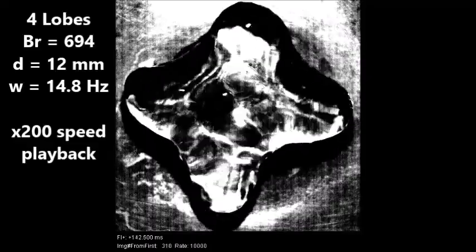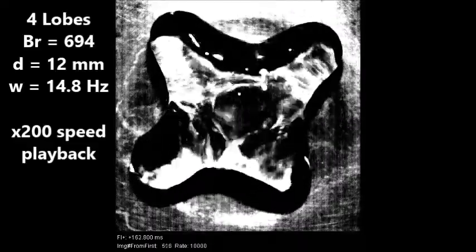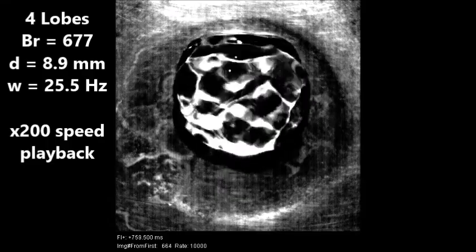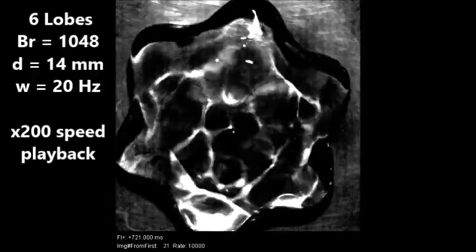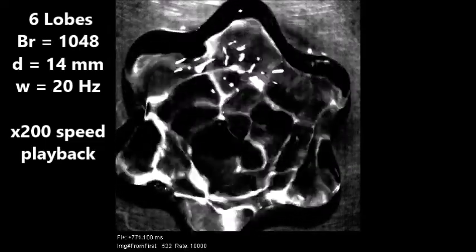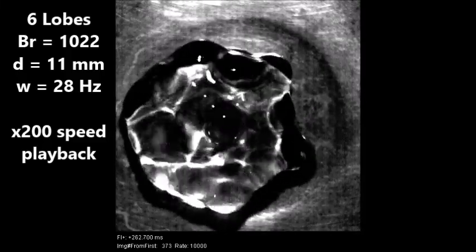This four-lobe droplet has a Brenner number of 694. This four-lobe droplet's diameter is 33% less than the first and its frequency is 78% higher, but they have the same mode shape and nearly identical Brenner numbers. This 6-lobe droplet has a Brenner number of 1048. Here we see another 6-lobe droplet with a Brenner number of 1022.